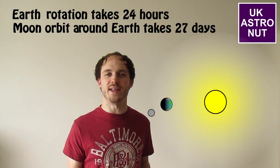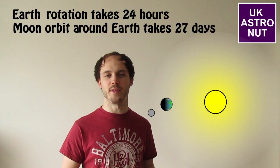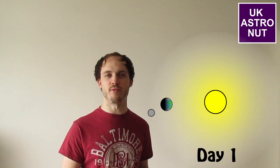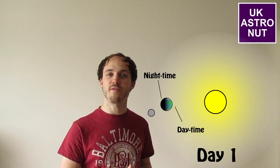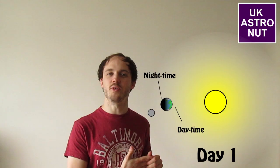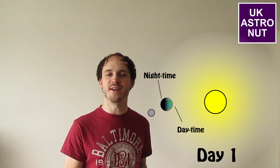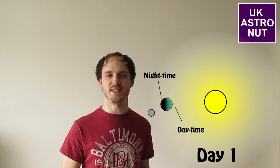The moon, on the other hand, takes 27 days to travel around the Earth. So let's take an example and look at day one of the time it takes for the moon to travel around the Earth. Anyone facing towards the sun will be in daytime, and anyone facing away from the sun will be in night time. In this example, on day one, anyone facing away from the sun — i.e. in the night time — will be able to see the moon.